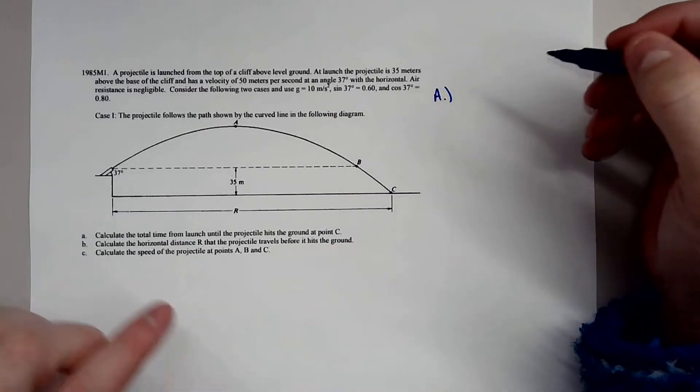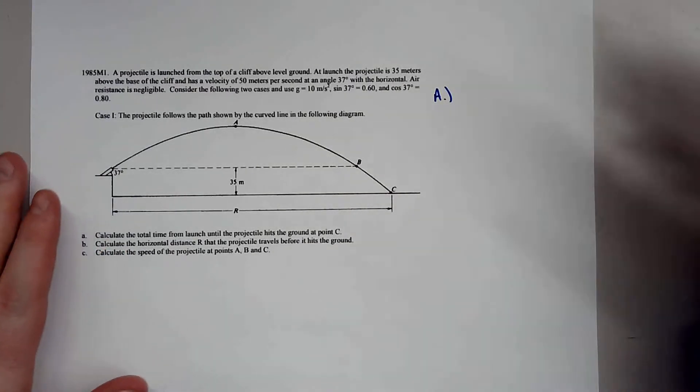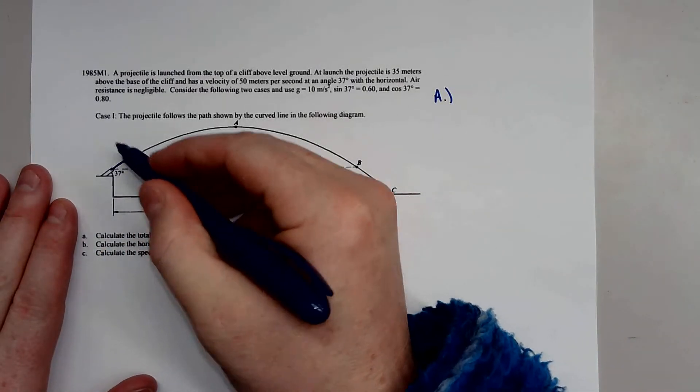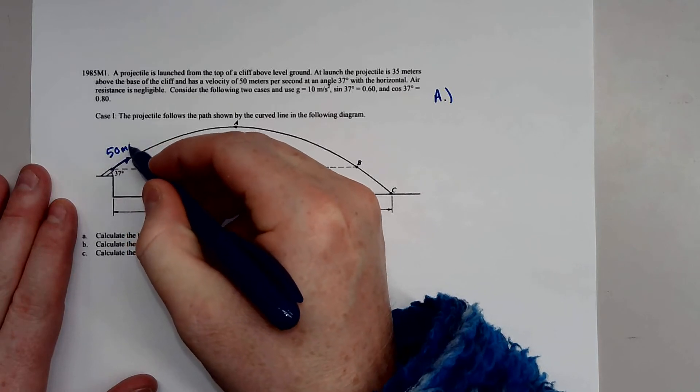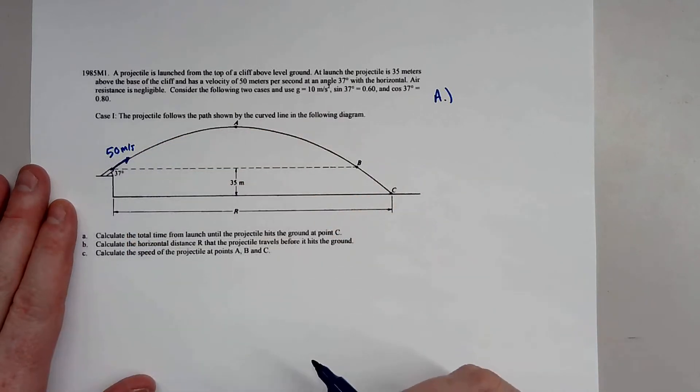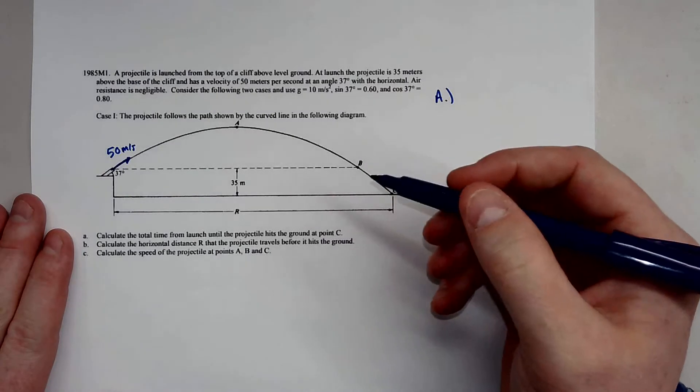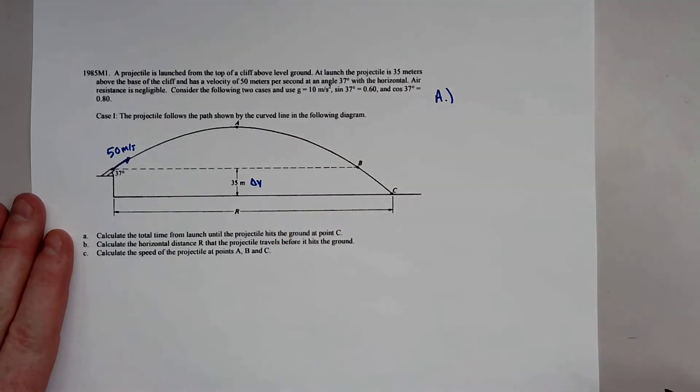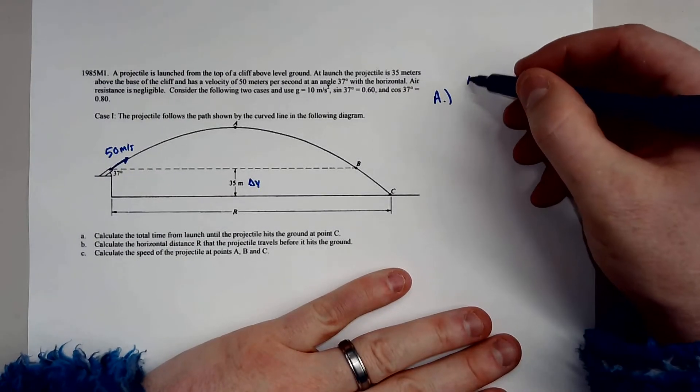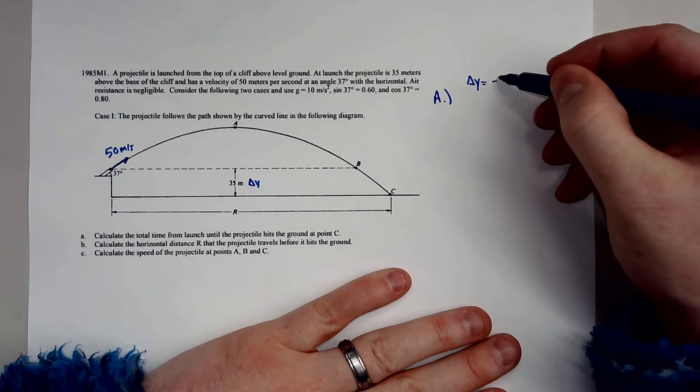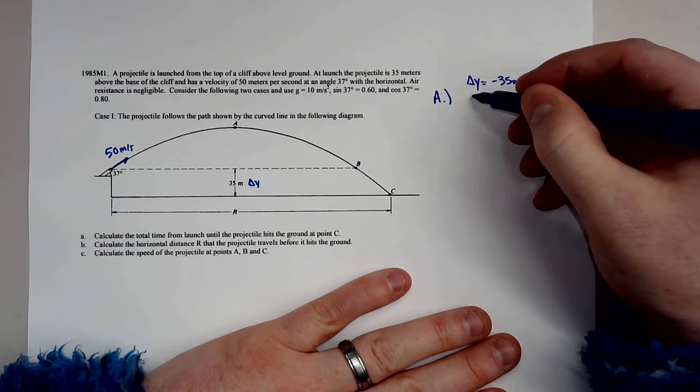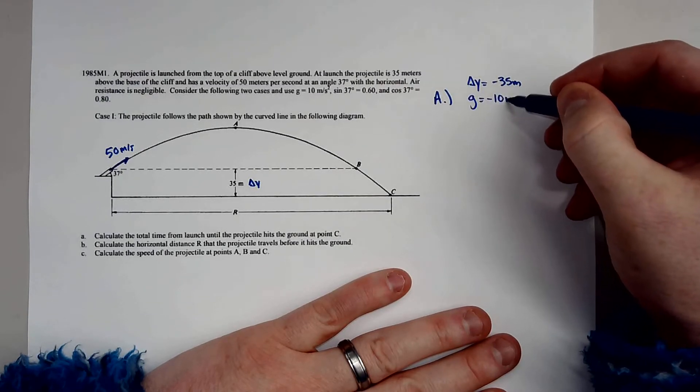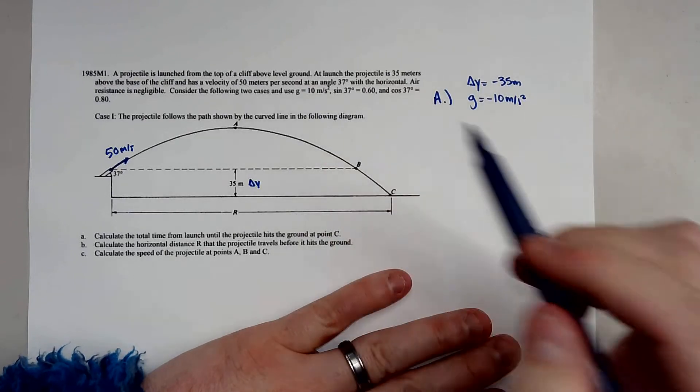Part A: Calculate the total time from launch until the projectile hits the ground. Notice it's being fired off at 50 meters per second at an angle of 37 degrees above the horizontal. This is a little bit different than most because you actually have a starting displacement, so this makes this problem a little bit trickier. So all I have to do is write down my variables. Delta Y is going to be negative 35. Gravity is negative 10 meters per second squared, as the problem says.